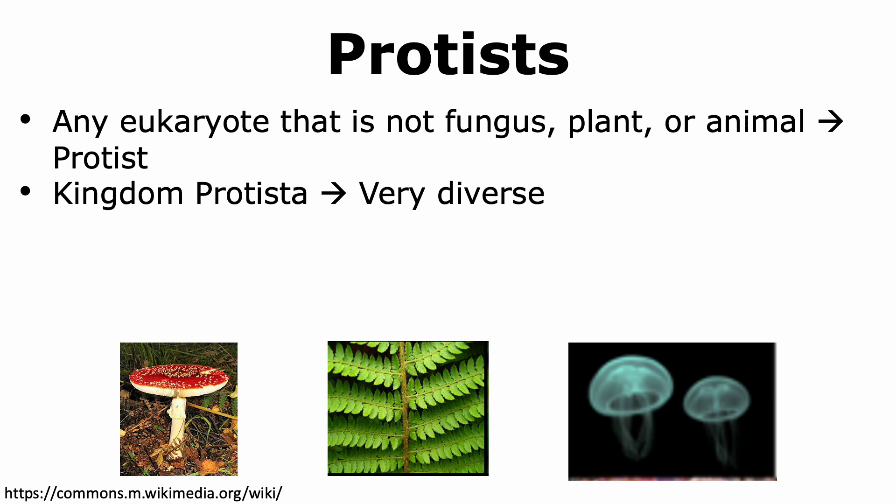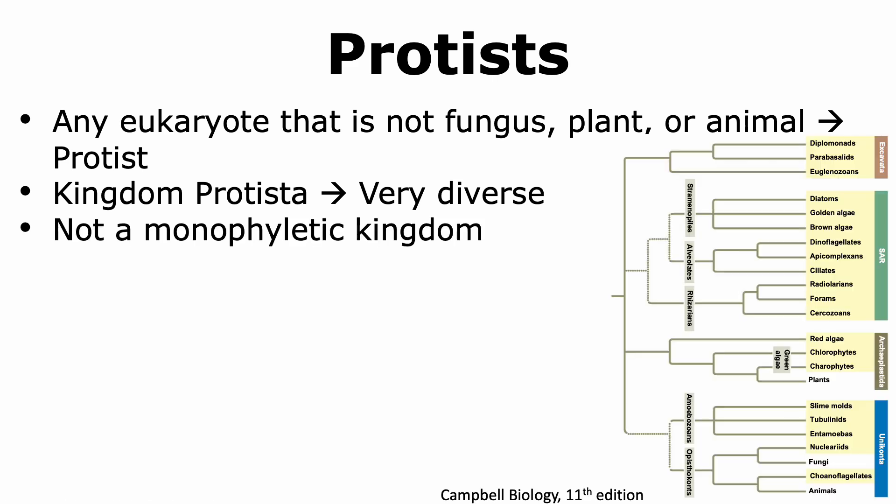Due to this diversity, the kingdom of Protista is not a monophyletic kingdom. When we look at the phylogenetic tree, we are able to see that plants, fungi, and animals arose from ancestors that belonged to the kingdom of Protista. However, plants, fungi, and animals were not considered to be part of the kingdom of Protista. This also shows that the kingdom of Protista is not a monophyletic kingdom.